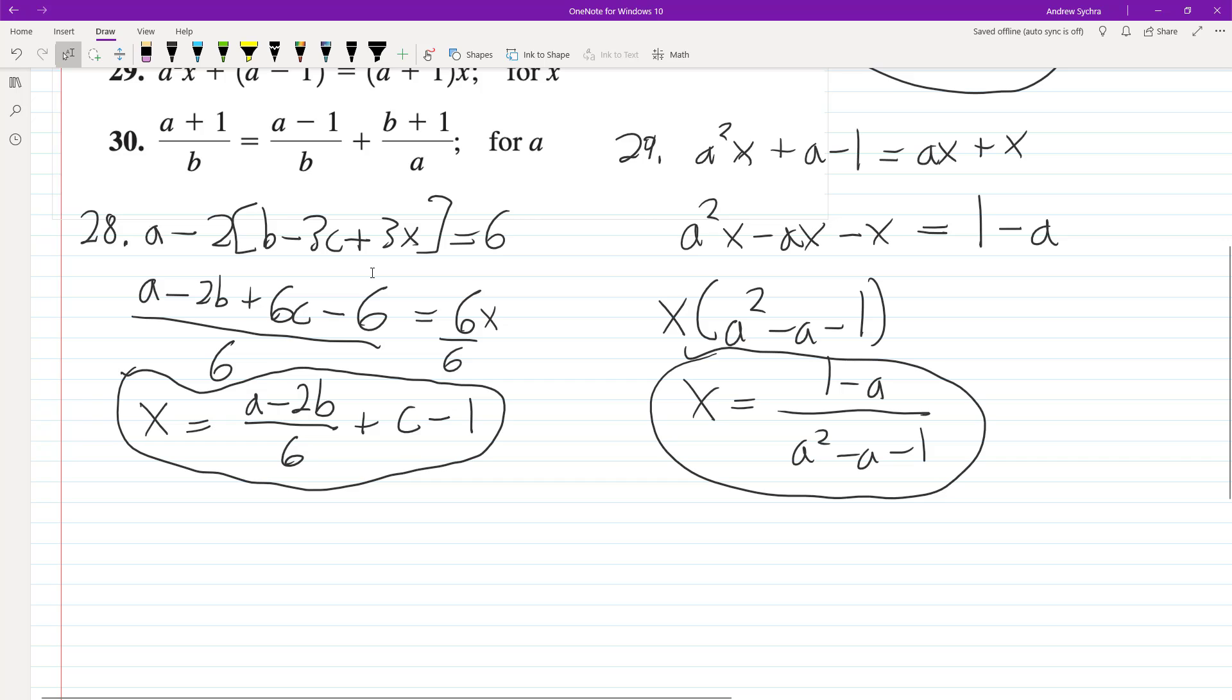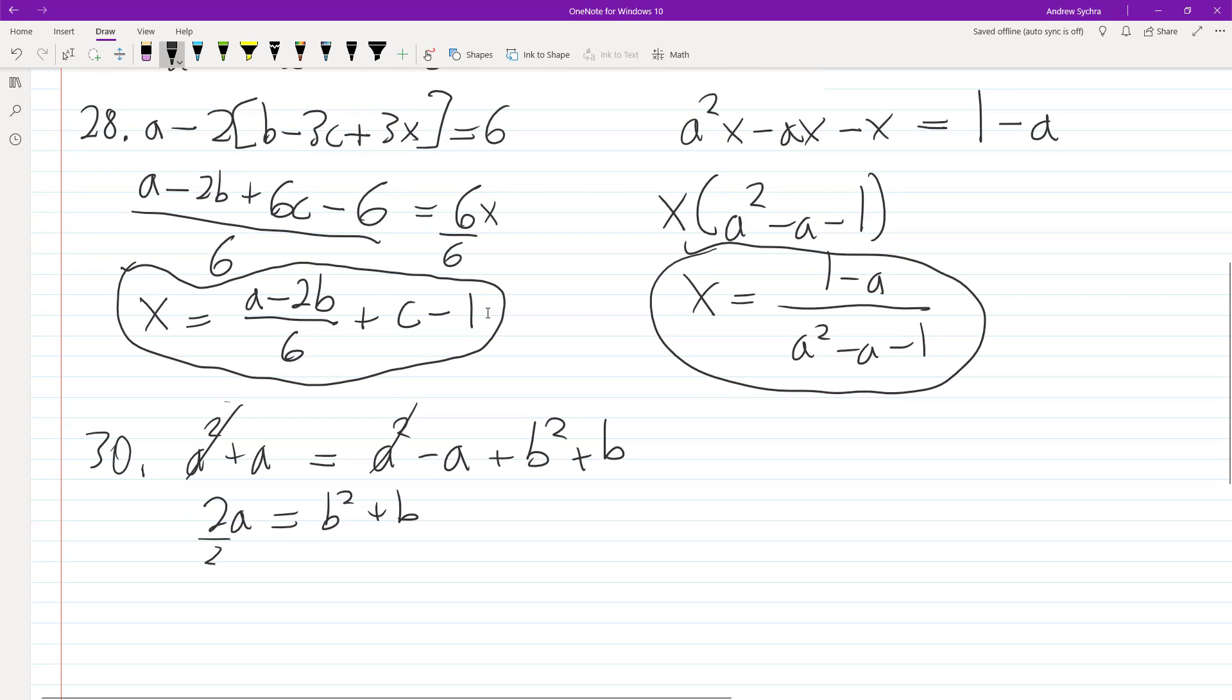Now, so we solve for A for this one. The common denominator is going to be AB. So we're going to have A squared plus A equals A squared minus A plus B squared plus B. And the reason that happens is because each of these has AB under them. So what's going to happen now is subtract A plus A. So these cancel out. We get 2A is equal to B squared plus B. We're solving for A. So A just becomes A is equal to B squared plus B divided by 2. That's it.